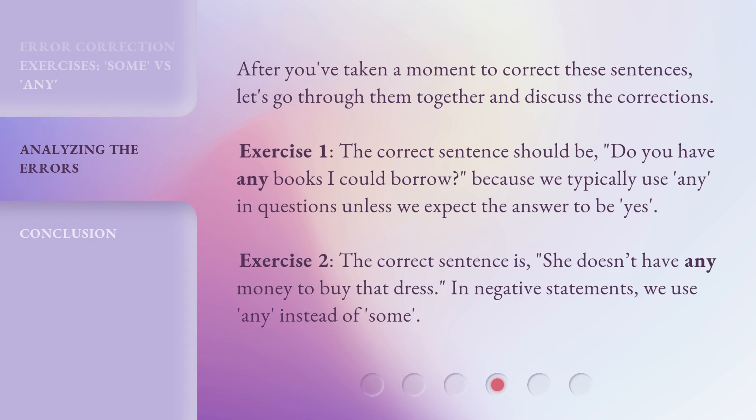After you've taken a moment to correct these sentences, let's go through them together and discuss the corrections. Exercise 1. The correct sentence should be, do you have any books I could borrow? Because we typically use any in questions unless we expect the answer to be yes.